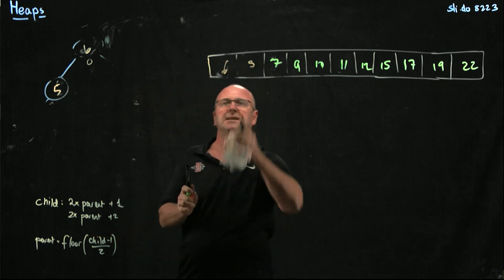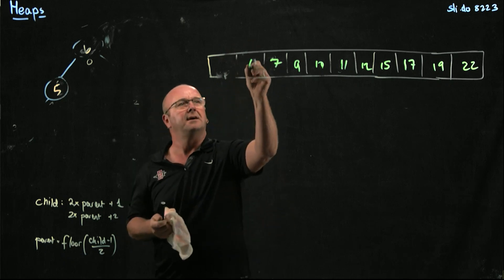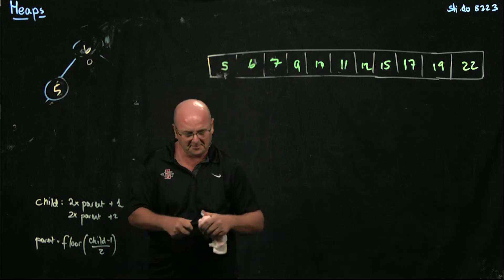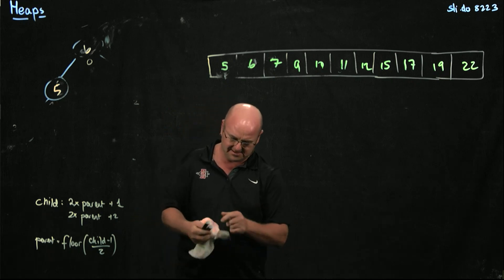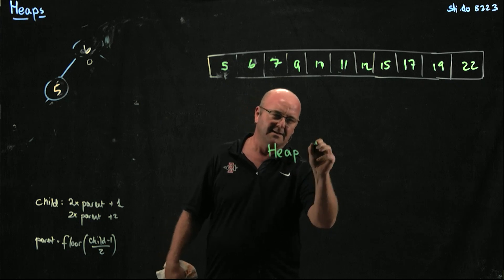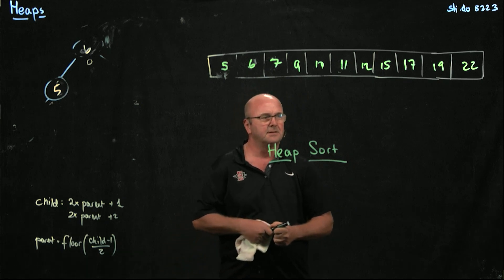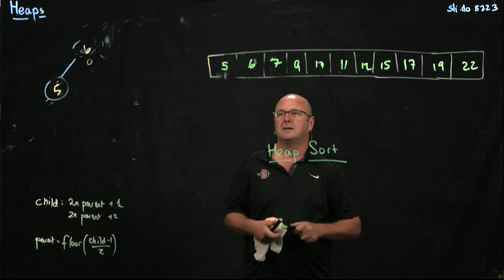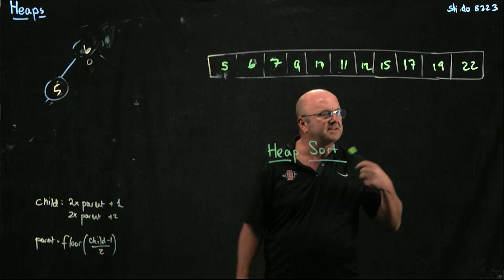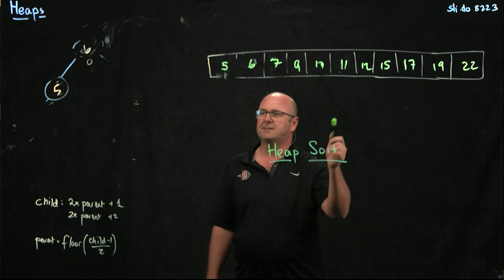We take away the 6, we swap it with the 5 — heap sort. The numbers are sorted. All we did is take things away. We just kept taking things away and everything ends up sorted.